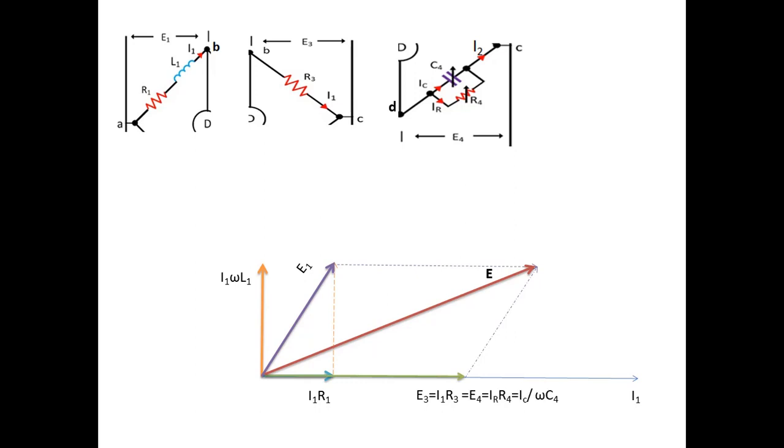We can see here that the voltage E4 is equal to IR into R4. So we can deduce that this current IR will also be along the x-axis. That is, it will be in phase with the voltage E4.